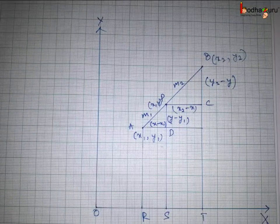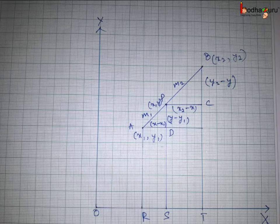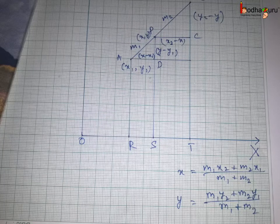So when a point internally divides distance between other two points into M1 to M2 ratio, this formula gives coordinate of that point. This is called section formula. That's all for now. Bye bye.